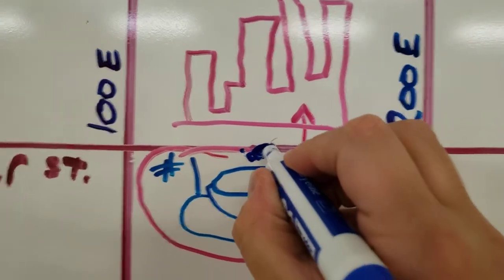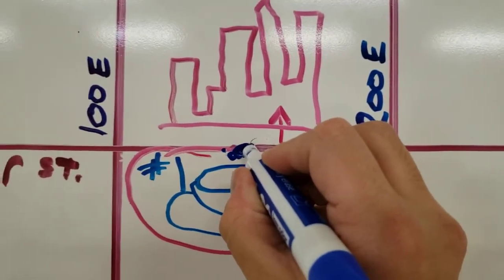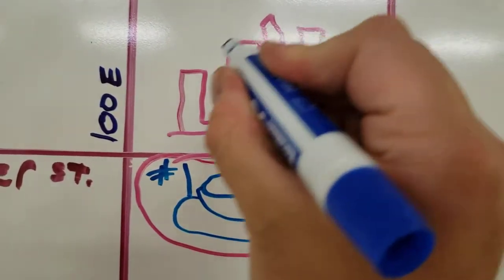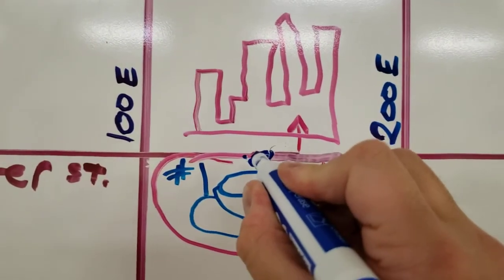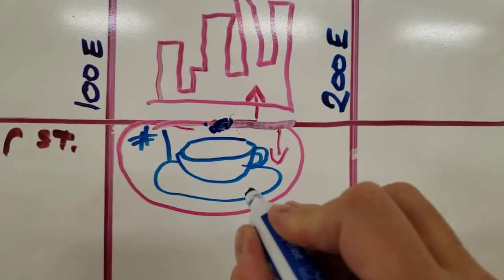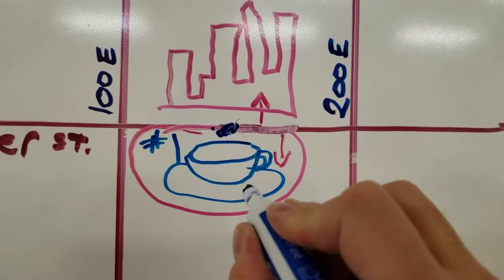And then it says to look on the south side of the road. So, on the north side of the road is the city picture, but to the south side of the road is this teacup. So, that is going to be our answer for number one, is the teacup.